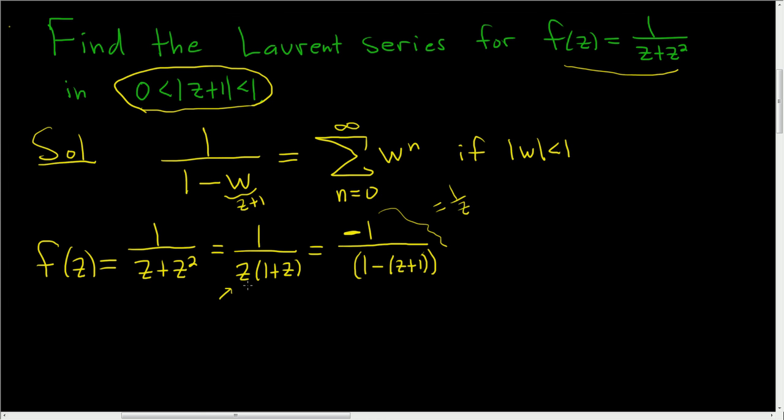And now we're just missing the 1 plus z. There it is. So it's really a slick method to take. So let's keep going. So this is negative 1 over 1 plus z times 1 over 1 minus z plus 1.